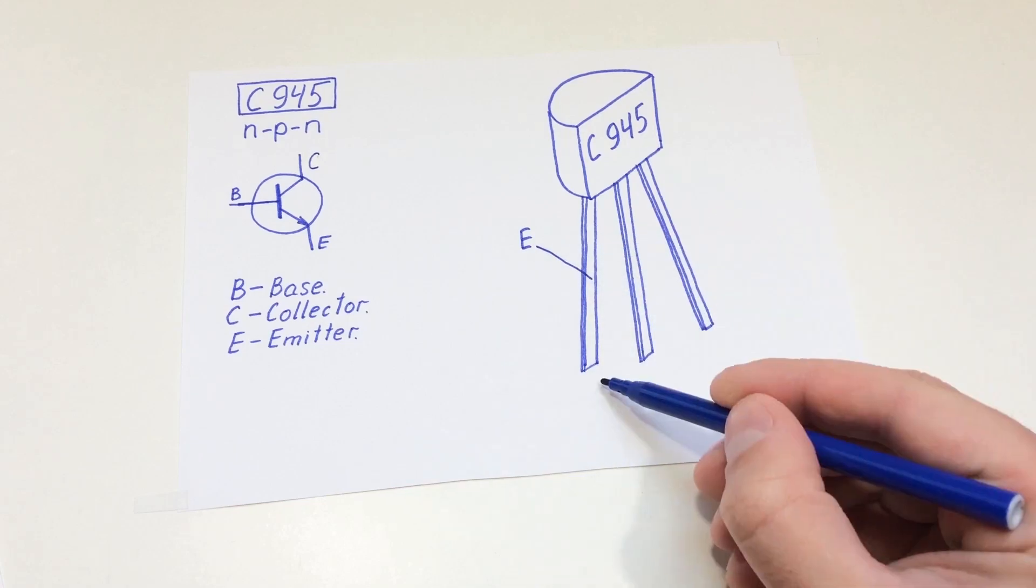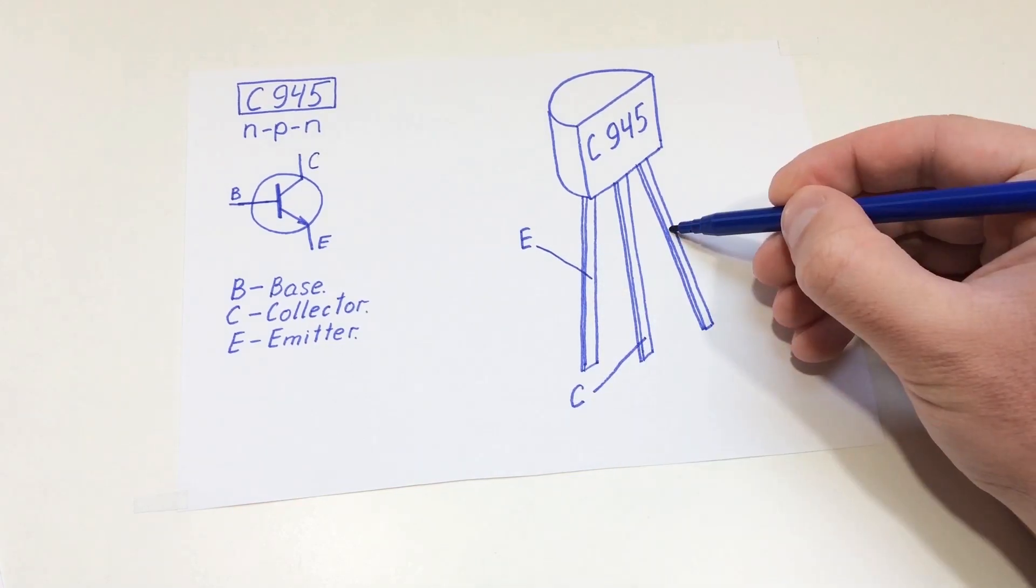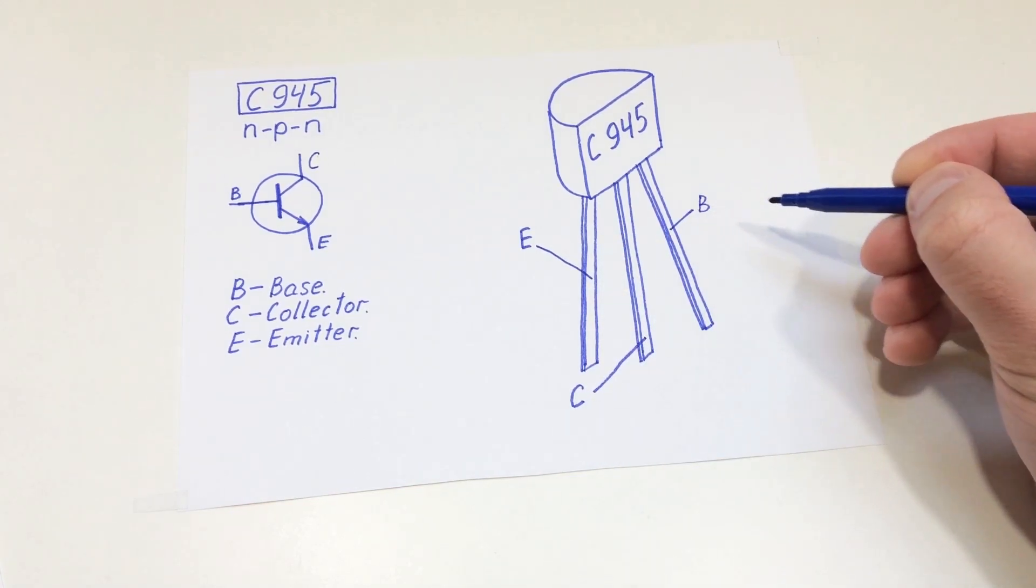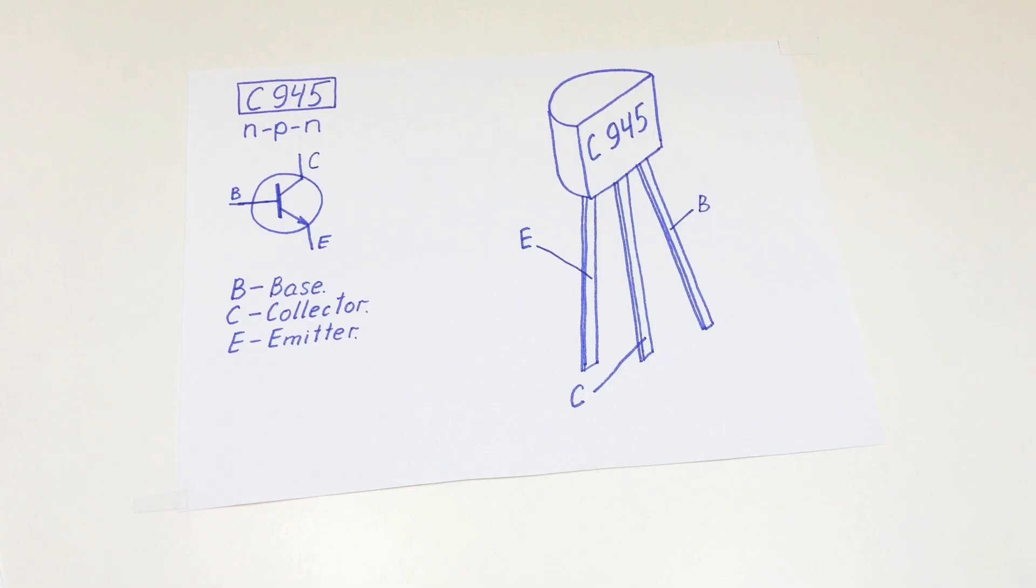We begin with the transistors. If you hold a C945 transistor with the flat side facing you, the pins are emitter on the left, collector in the middle, and base on the right.